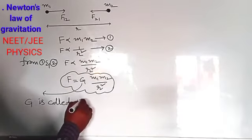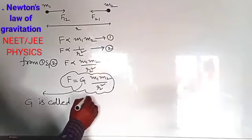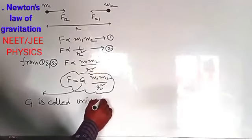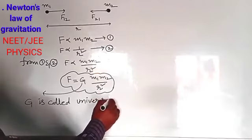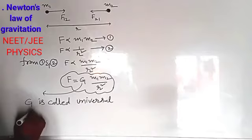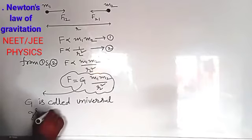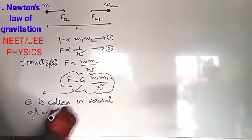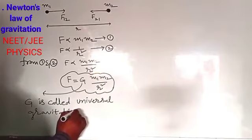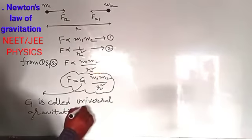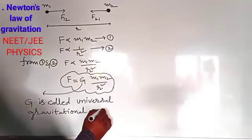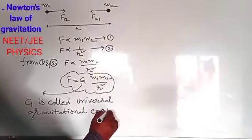G is always constant in the universe. It does not vary in value, but its numerical value changes based on the system of units. That means if we take the SI system, the value will change, and if we take the CGS system, the value will change.